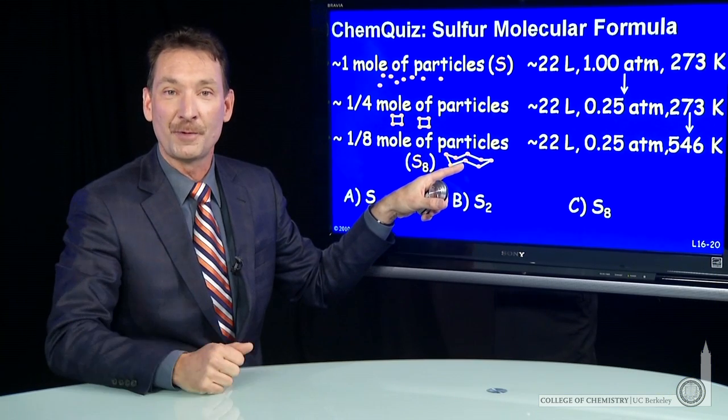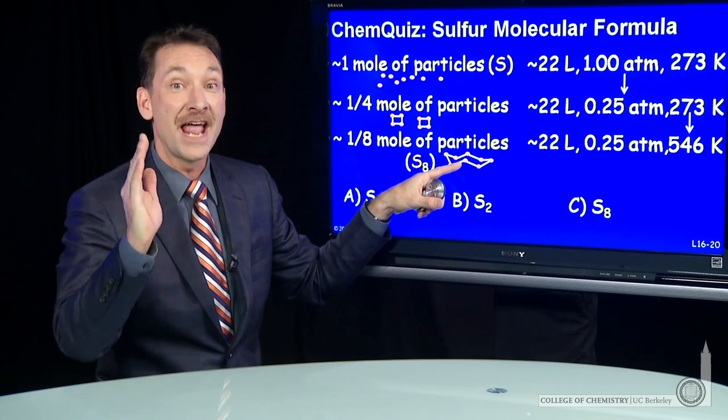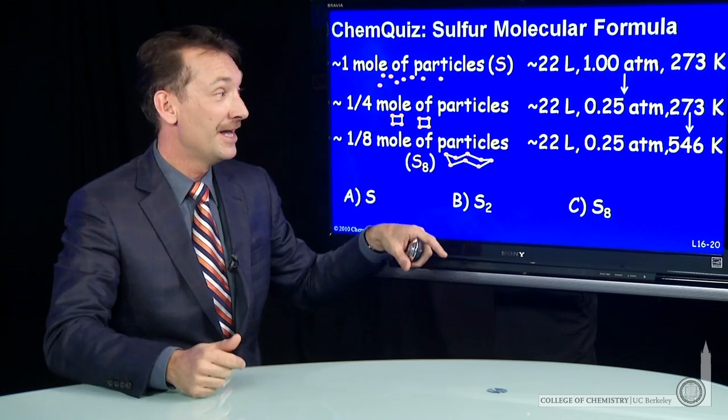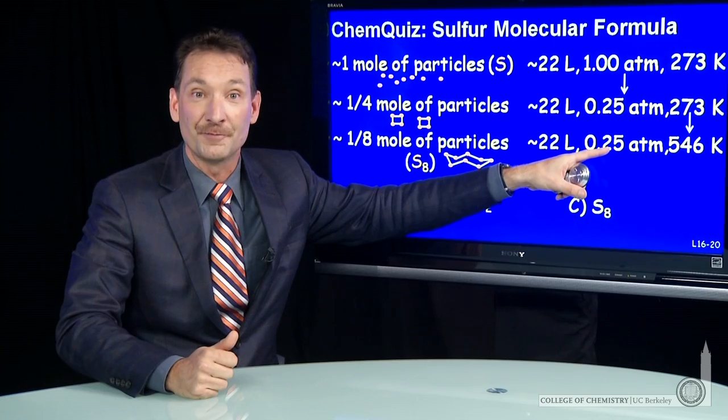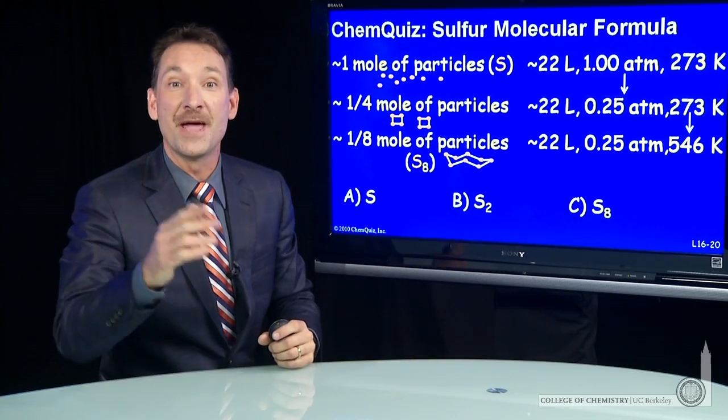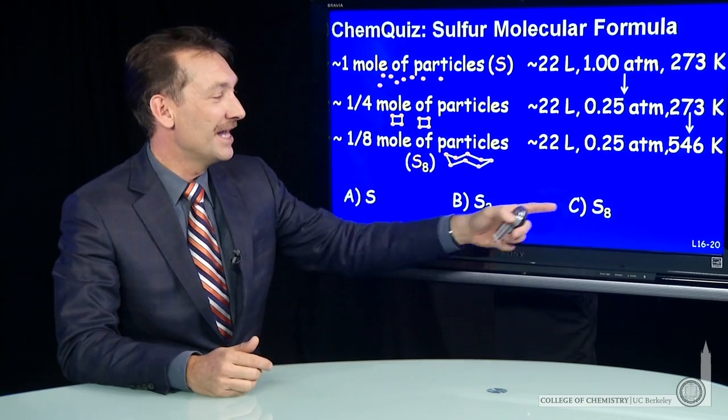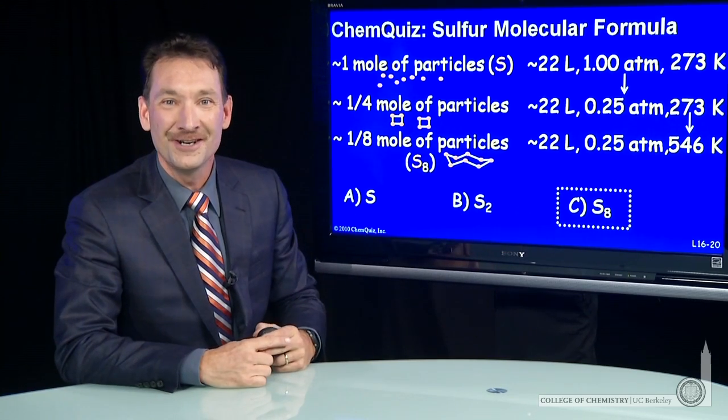I have one eighth of a mole of particles, one mole of sulfur atoms, but one eighth of a mole of particles exerting a quarter atmosphere of pressure at 546 Kelvin in 22 liters obeys the ideal gas law. So those particles must be in groups of eight. The correct answer here: S8.